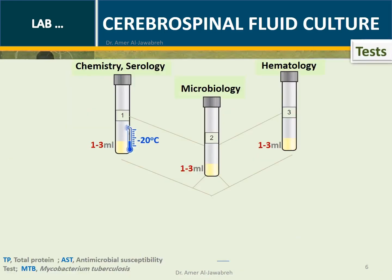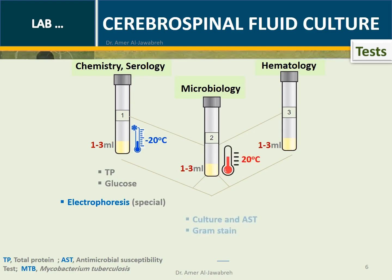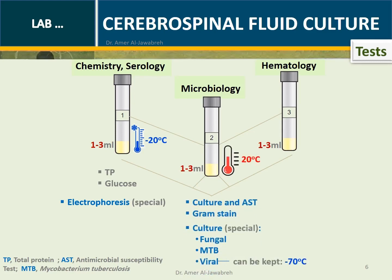CSF Tests: Tube 1 is used for measuring total protein and glucose, and sometimes electrophoresis. Tube 2 is preserved at 20°C for culture, gram stain, and sometimes special cultures for fungal, MTB, and viral agents. Tube 3 is preserved at 4°C for cell count and cytology.